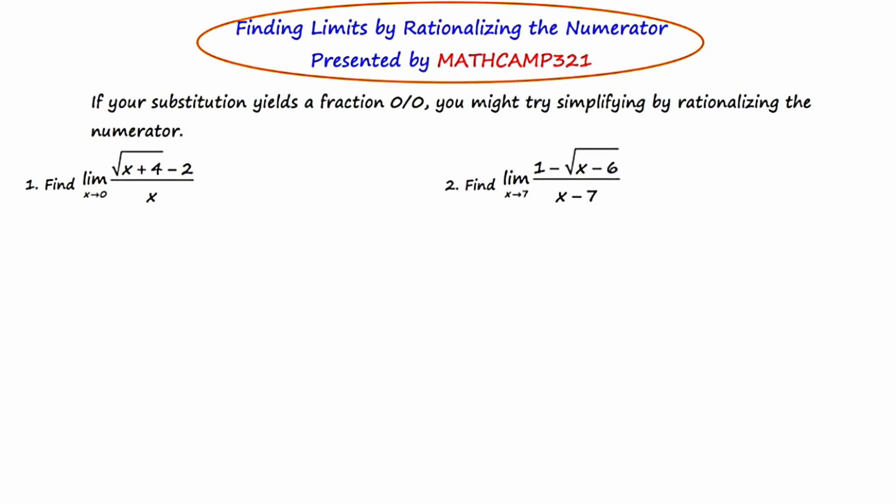Number one, find the limit of the expression the square root of x plus 4 minus 2 all over x as x approaches 0. Well, if we start off traditionally with a direct substitution, you'll see something bad happens.